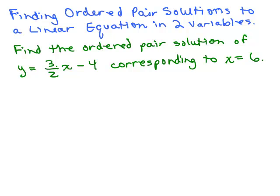Here's an example. Find the ordered pair solution of y equals 3 halves x minus 4 corresponding to x equals 6. What this is saying is you want the ordered pair where you're going to put in 6 for x, so you're looking for the y coordinate. I've got y equals 3 halves x minus 4, and I'm going to plug in 6 for x.